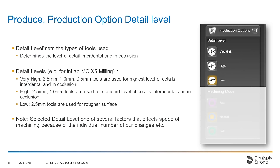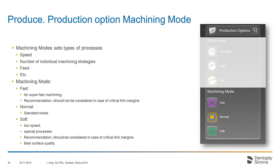Looking at the detail level: with CAM 16, the detail level always determines what kind of instruments will be used for milling the restoration. For example, if you choose Very High, all three instruments for milling will be used. If you choose High, only the 2.5 mm and 1 mm tools will be used. If you select Low, only the 2.5 mm instrument will be used. Of course, depending on which detail level you choose, it will affect the manufacturing time, and what machining mode you choose will also add milling time accordingly.